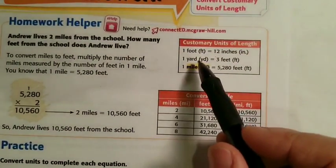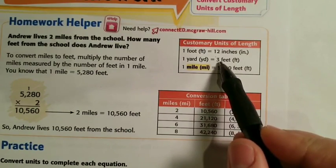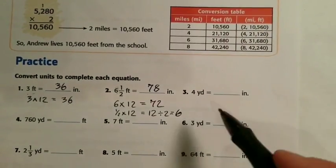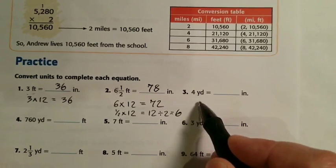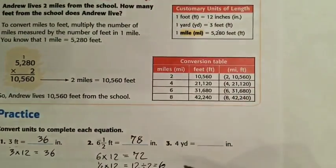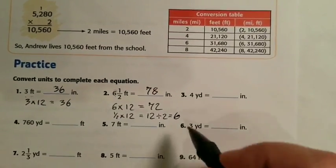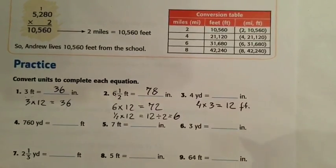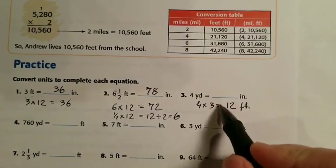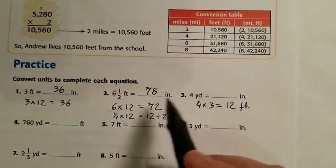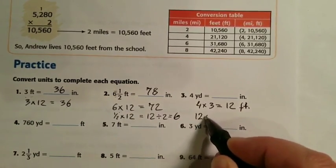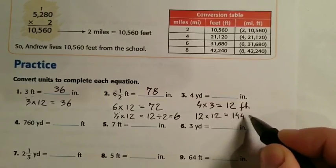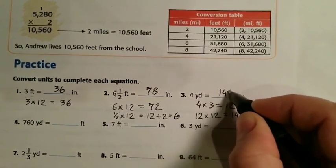Number three: four yards to inches. There's no direct yard-to-inches conversion in the table, so we do it in two steps. One yard is 3 feet, so four yards is 4 times 3, which is 12 feet. Then we convert 12 feet to inches by multiplying by 12: 12 times 12 is 144 inches.